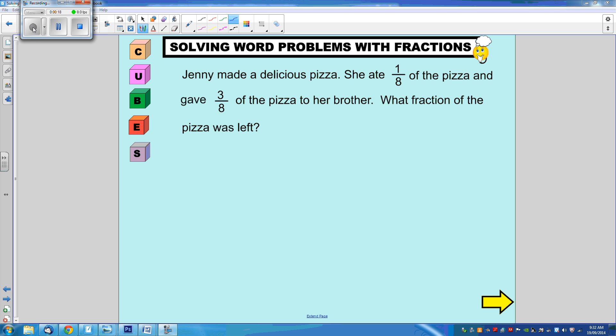Let's start with C for circling the numbers: 1 eighth and 3 eighths. Now U is to underline the question. What fraction of the pizza was left?